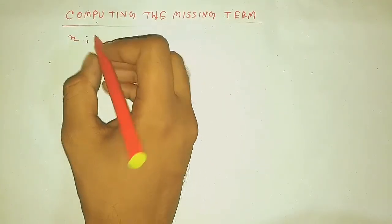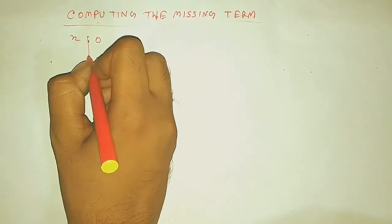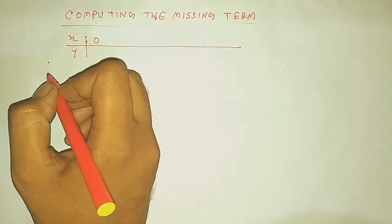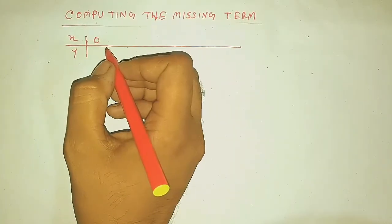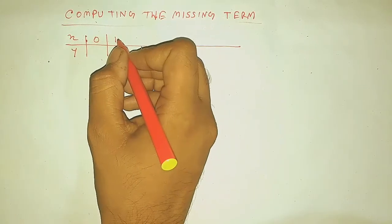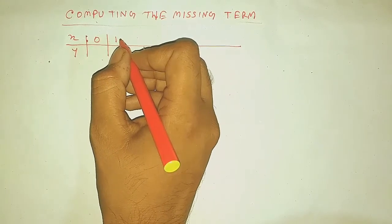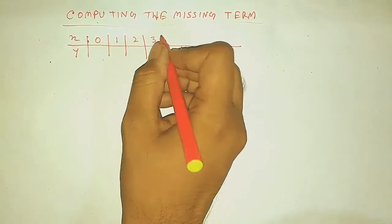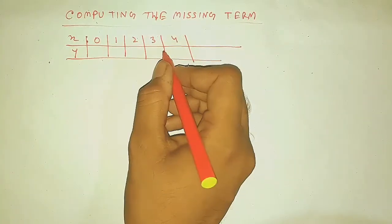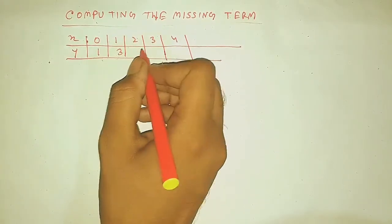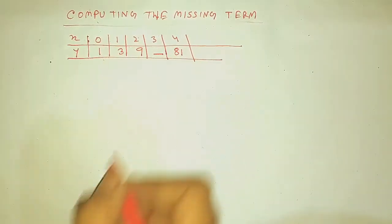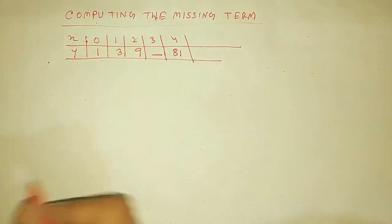Now we are going to solve the missing term problem. This is also an equispaced distribution. All X values and all Y values are given except one term. The X values go from 0 to 4, and the Y values are 1, 3, 9, and one blank missing term that we need to compute.